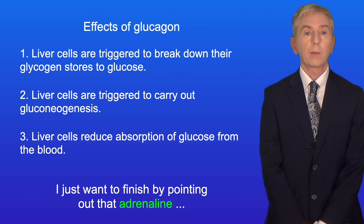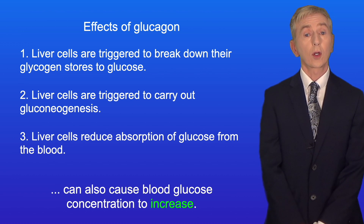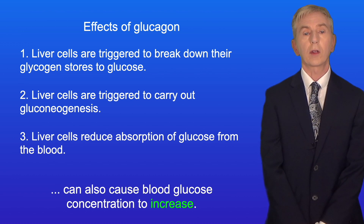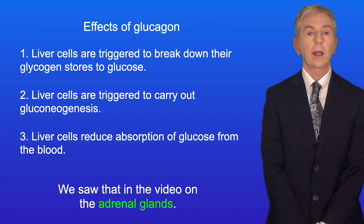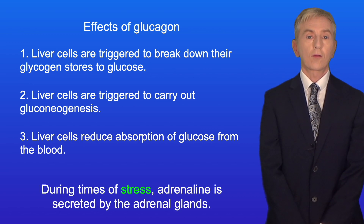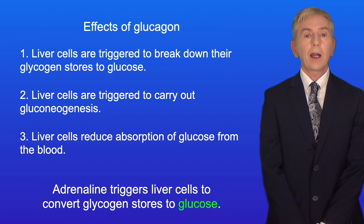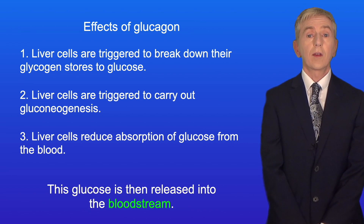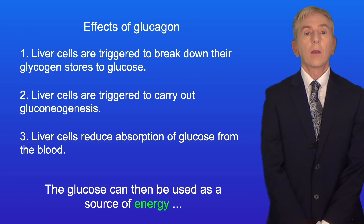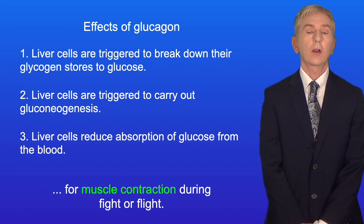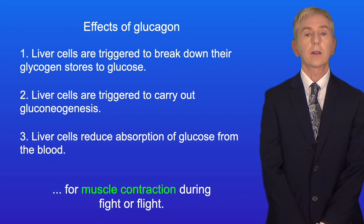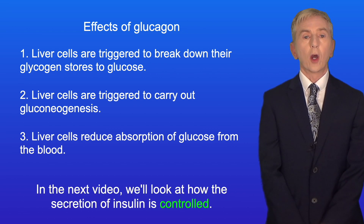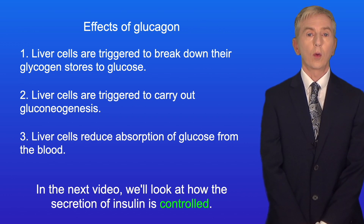Adrenaline can also cause blood glucose concentration to increase, as we saw in the video on the adrenal glands. During times of stress, adrenaline is secreted by the adrenal glands, and adrenaline triggers liver cells to convert glycogen stores to glucose. This glucose is then released into the bloodstream, where it can be used as a source of energy for muscle contraction during fight or flight. In the next video, we look at how the secretion of insulin is controlled.